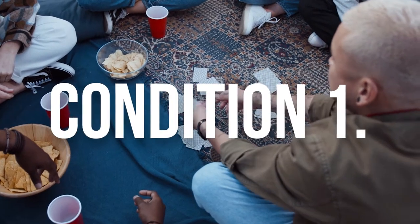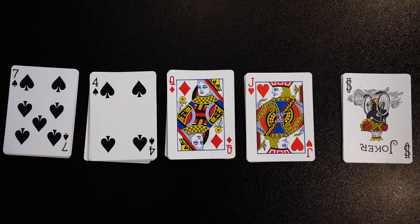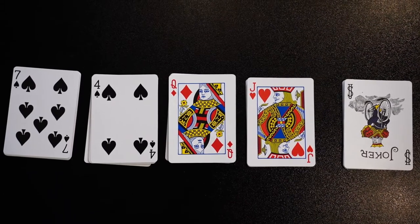There are three conditions players must meet to satisfy before going out. Condition number one: The partnership must have completed two dirty books, two clean books, and one wild book.